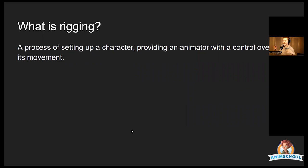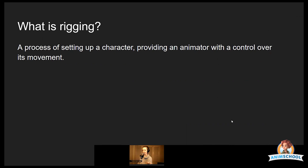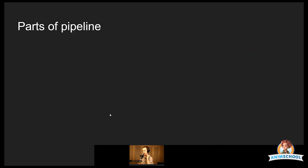So first, what rigging is in general. The definition I came up with is that it's a process of setting up a character, providing an animator with control over its movement. To understand that properly, let's talk about what parts of the pipeline we know — what parts of the pipeline in relation to character can you think of?